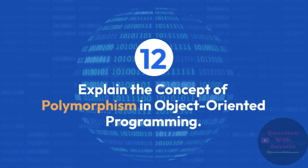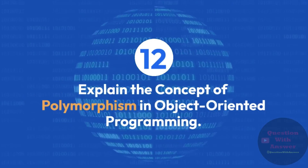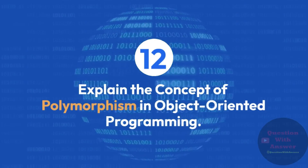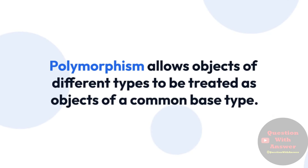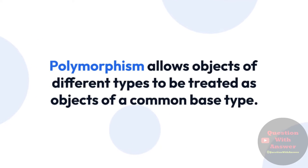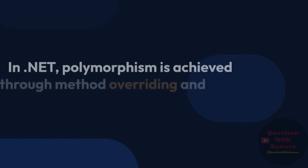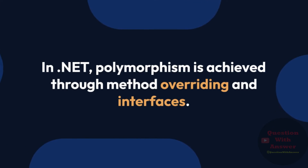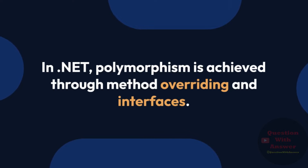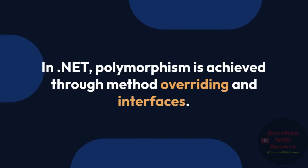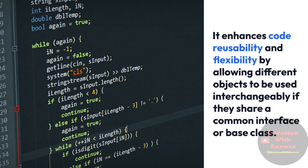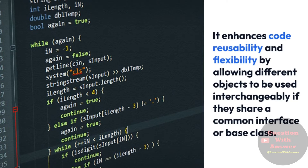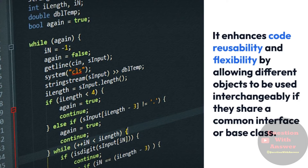Question 12: Explain the concept of polymorphism in object-oriented programming. Answer: Polymorphism allows objects of different types to be treated as objects of a common base type. In .NET, polymorphism is achieved through method overriding and interfaces. It enhances code reusability and flexibility by allowing different objects to be used interchangeably if they share a common interface or base class.